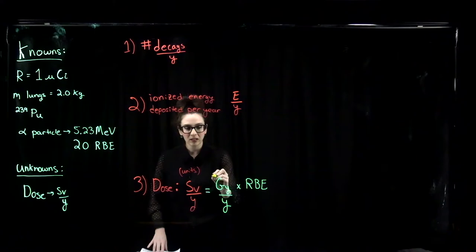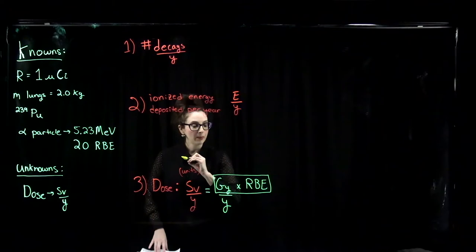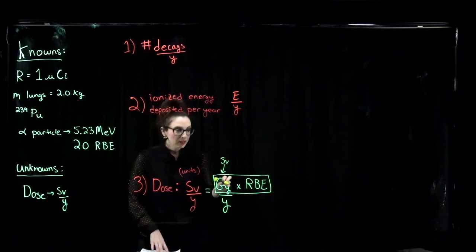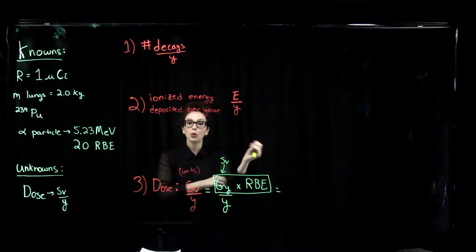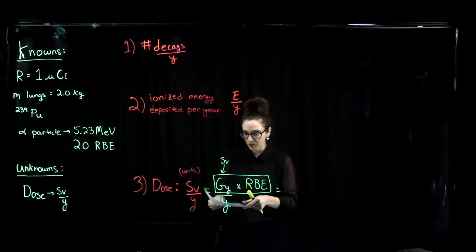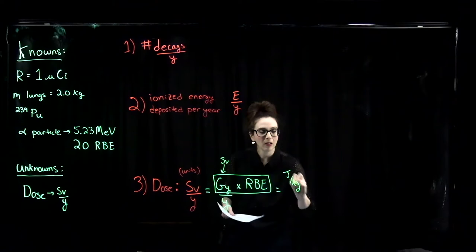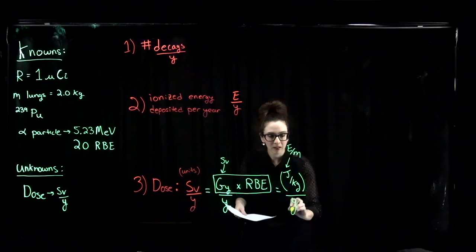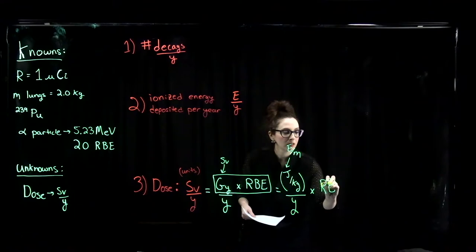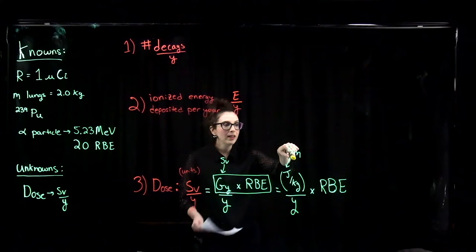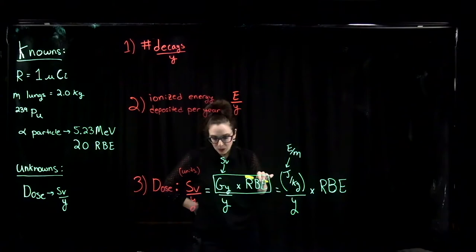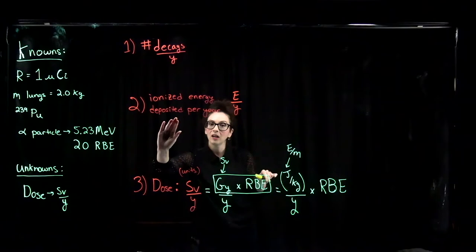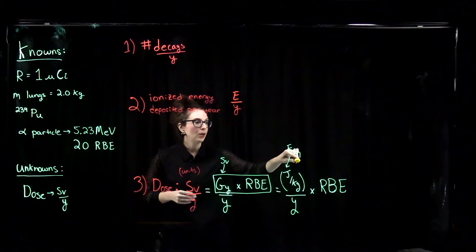The unit of gray is a joule per kilogram — an energy per mass. So we're looking for an energy per mass per year, times the RBE. In order to get the dose in sieverts, we have to find this quantity E over M: the ionized energy deposited per year by this alpha particle decay. We already know the RBE, so we have to figure out what is this energy deposited per year, and we already know the mass.